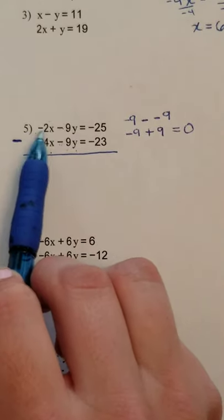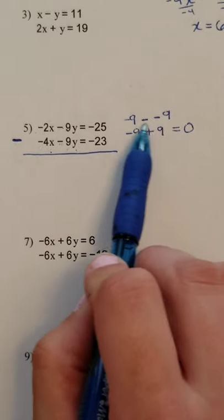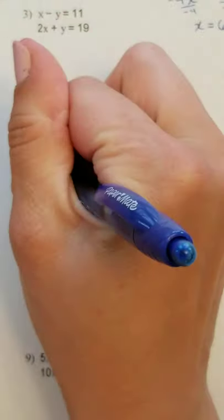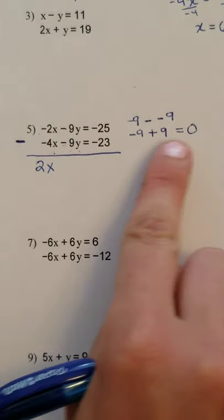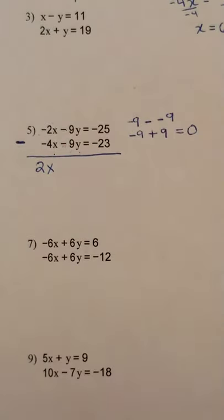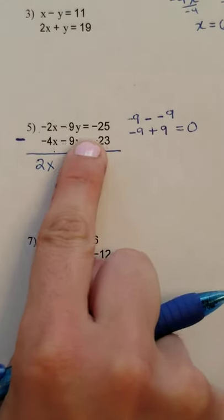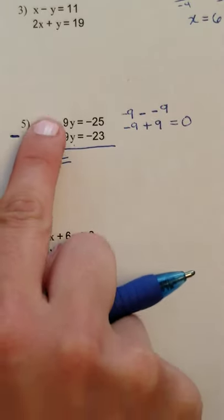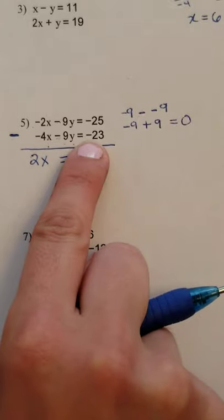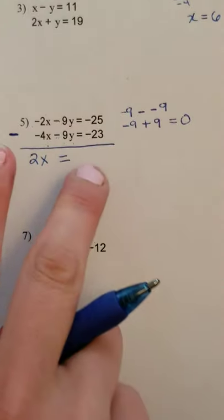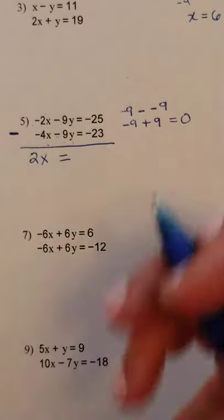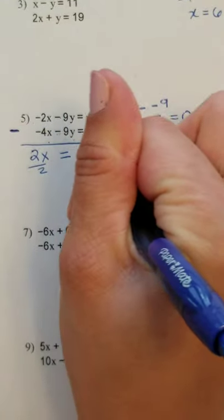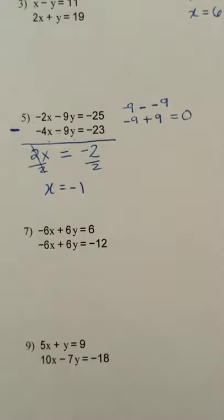So this is actually negative 2 minus negative 4. So just like here, these two minuses will become a plus. So it's actually negative 2 plus 4, which is 2x. We already talked about how this would become 0. So I'm not even going to write the y. We know it goes away. And then negative 25 minus negative 23. So again, just like here and with the x's, this negative and this negative would actually become positive. So it's negative 25 plus 23. And negative 25 plus 23 is negative 2. And I can easily solve for x by dividing off that 2. And x equals minus 1.